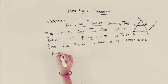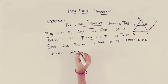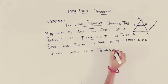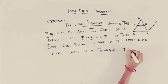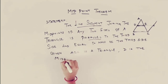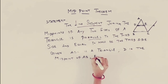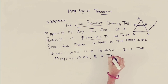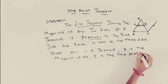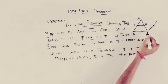Given: ABC is a triangle. D is the midpoint of AB. E is the midpoint of AC.